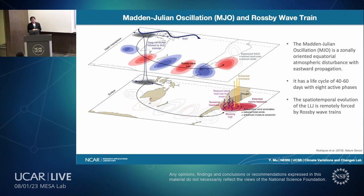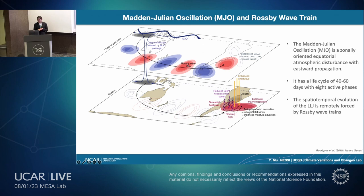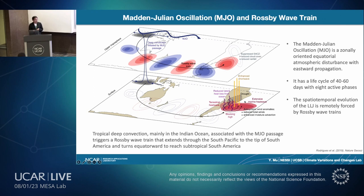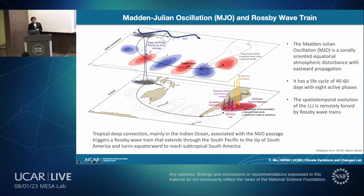The MJO, or Madden–Julian Oscillation, is a zonally oriented equatorial atmospheric disturbance that propagates eastward in the Pacific with a shorter life cycle of 40 to 60 days and eight different phases. We care about it because the spatial-temporal evolution of the South American low-level jet is remotely forced by Rossby wave trains. When the MJO initiates in the Indian Ocean, it triggers a Rossby wave train with geopotential high anomalies that extends through the South Pacific to the tip of South America, turning equatorward to reach subtropical South America and impacting its climate.